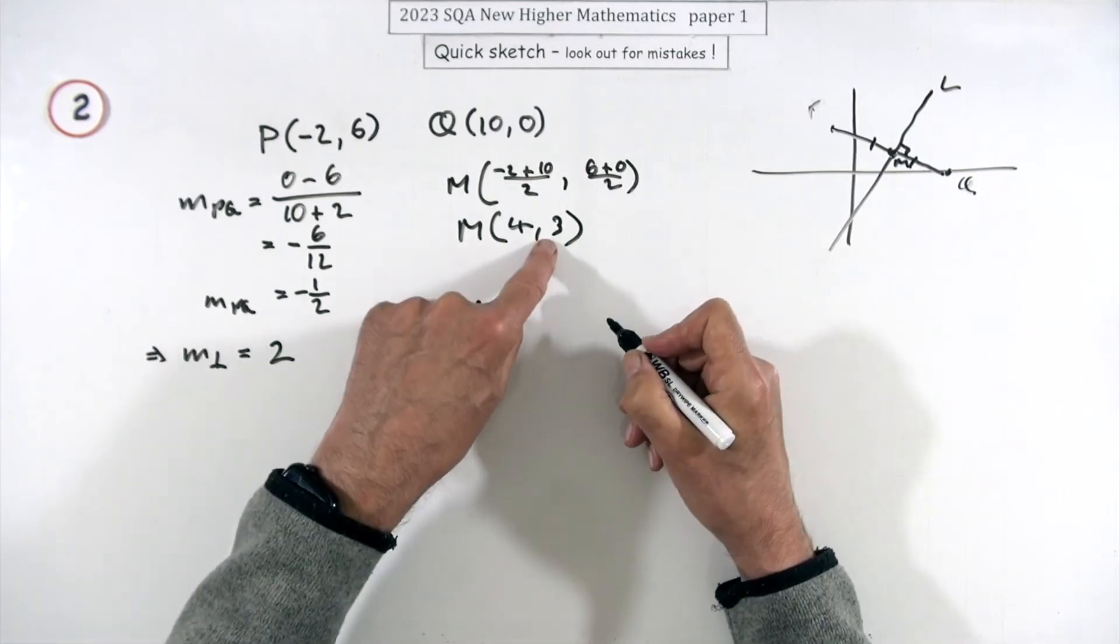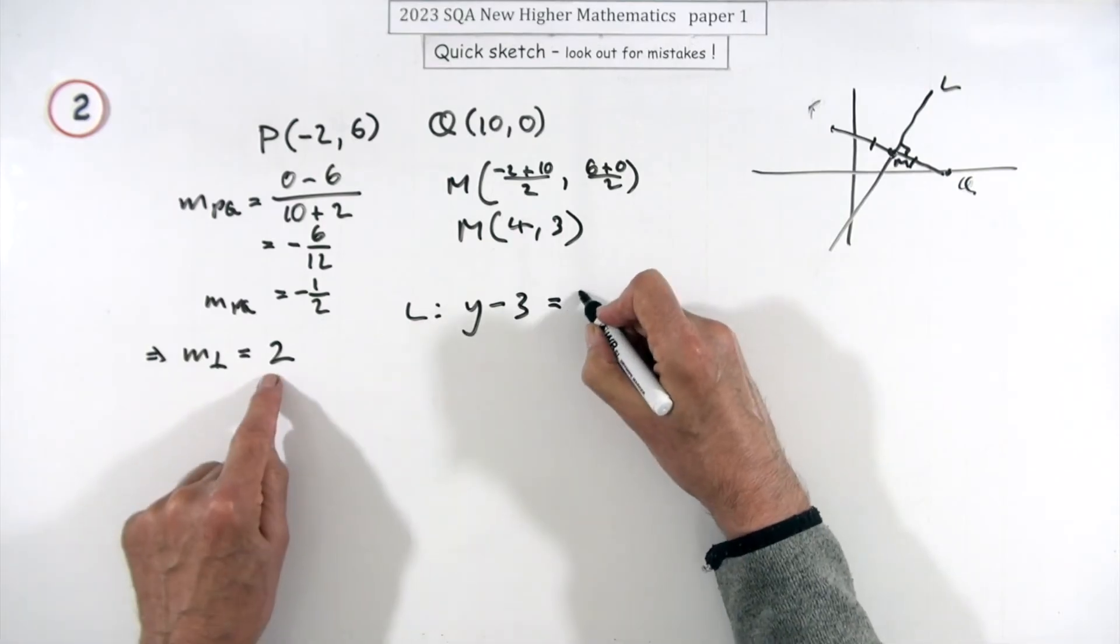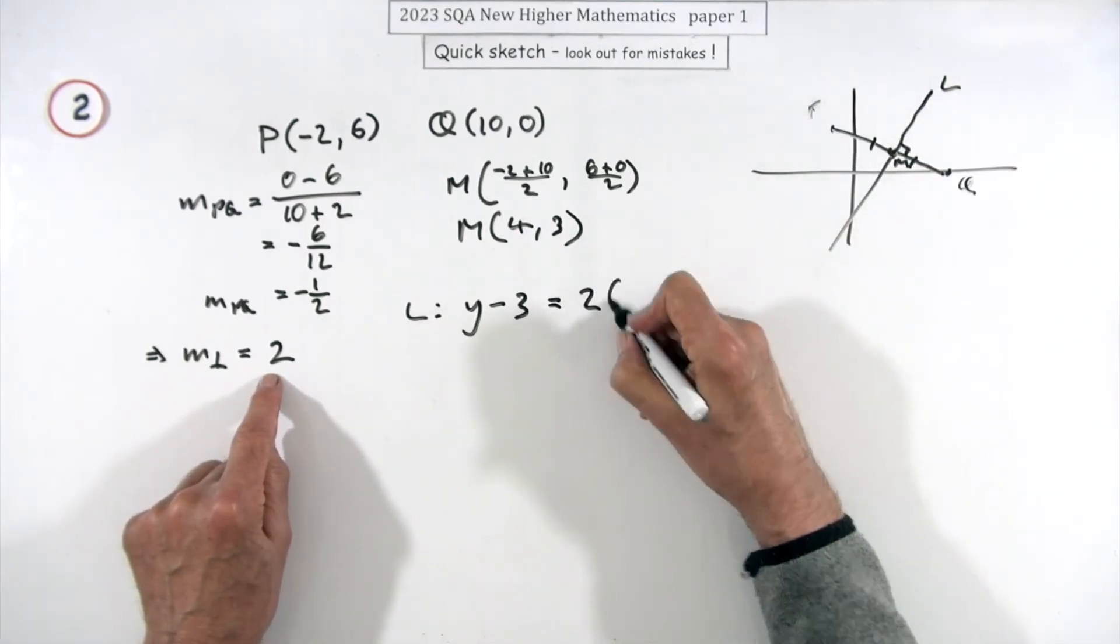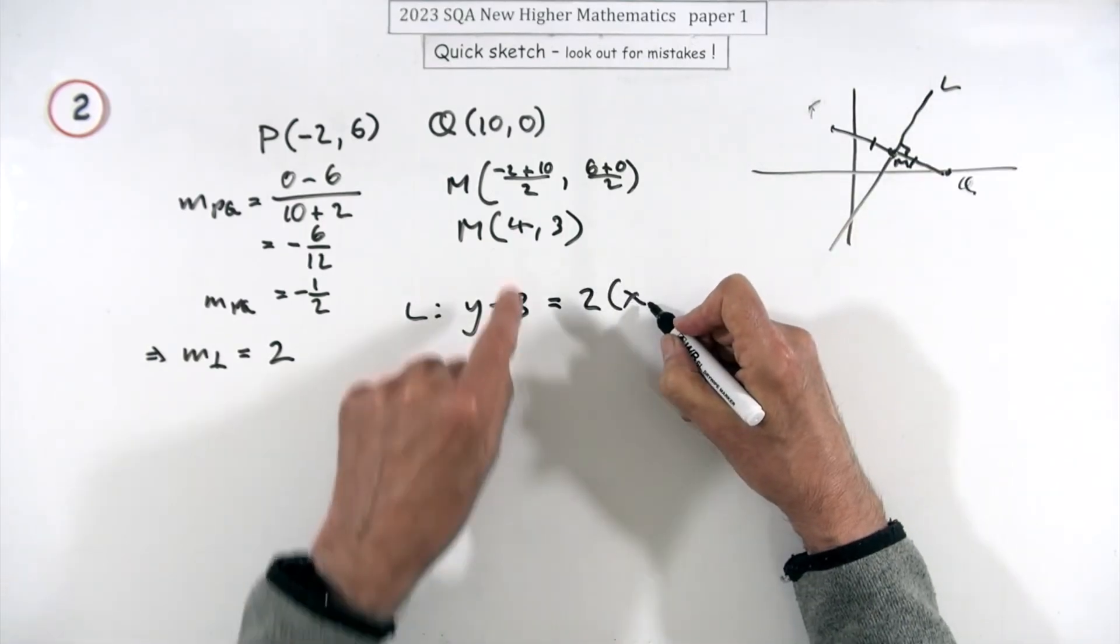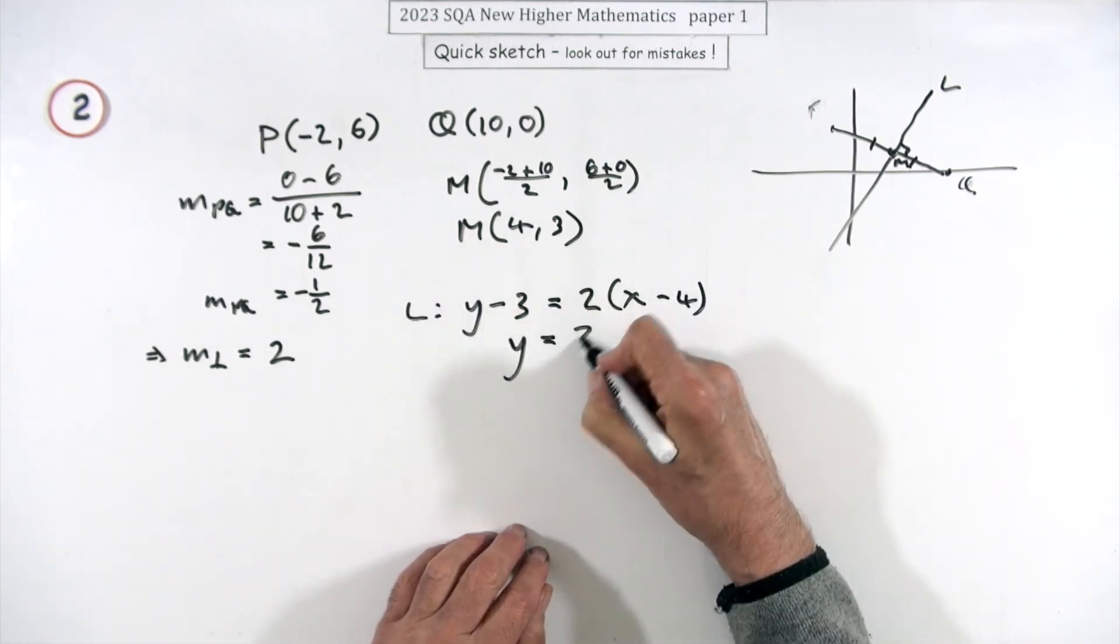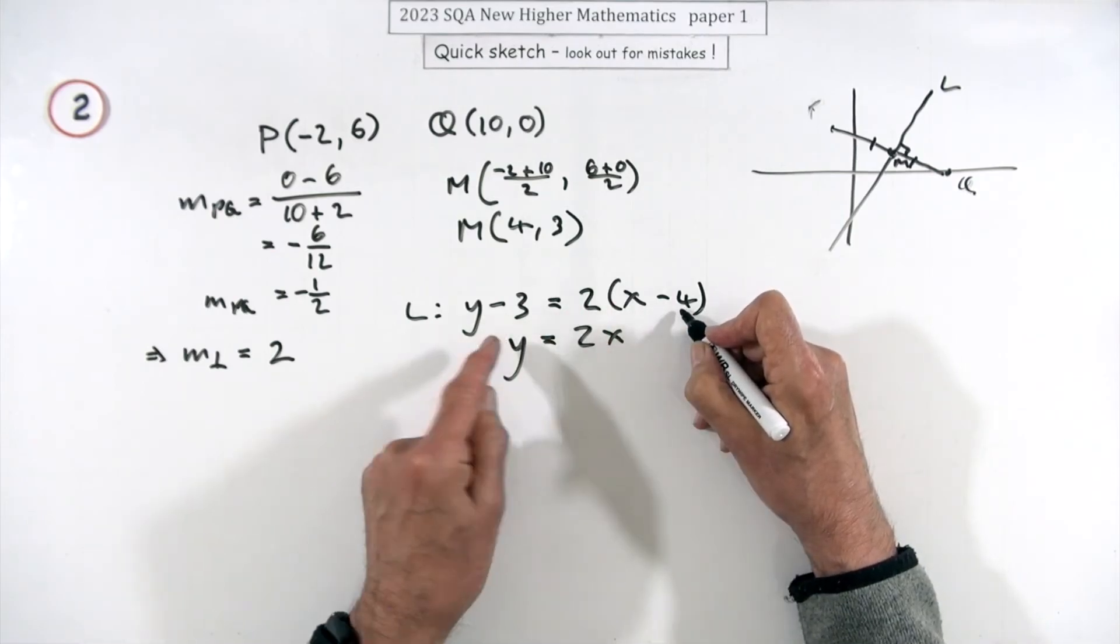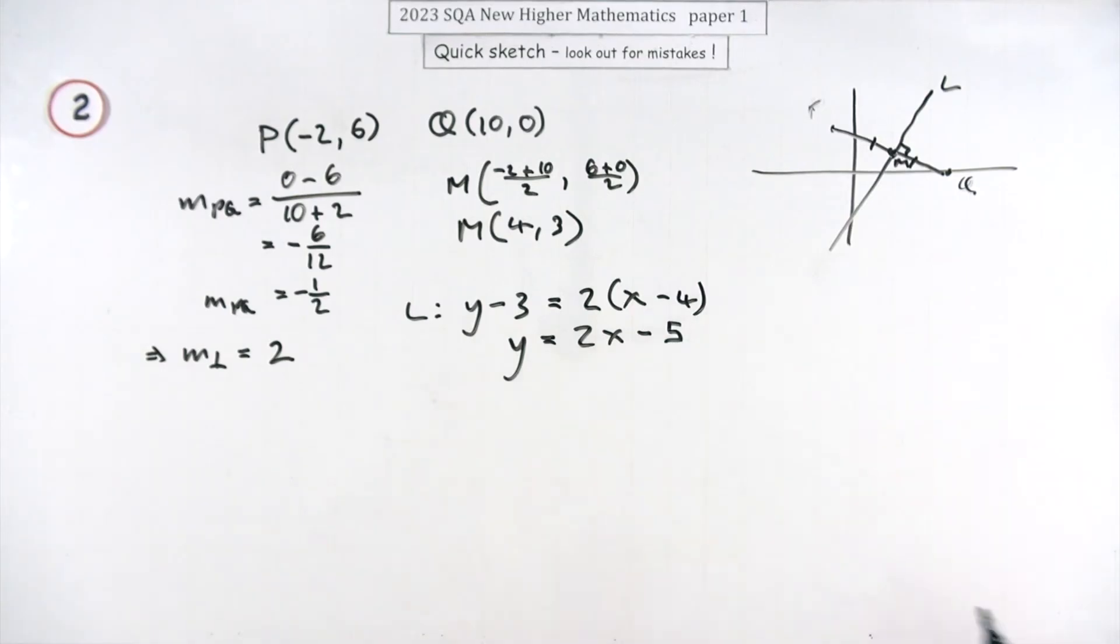y minus the y coordinate, make sure it's of this point. y minus 3 is the gradient steep up times x minus the x coordinate which is 4. And then just finish that off, so I'll be 2x minus the 8 but plus a 3, so minus 5.